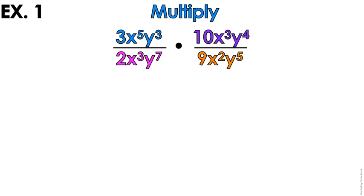We're multiplying rational expressions today. Example number one out of six examples is multiplying monomials.